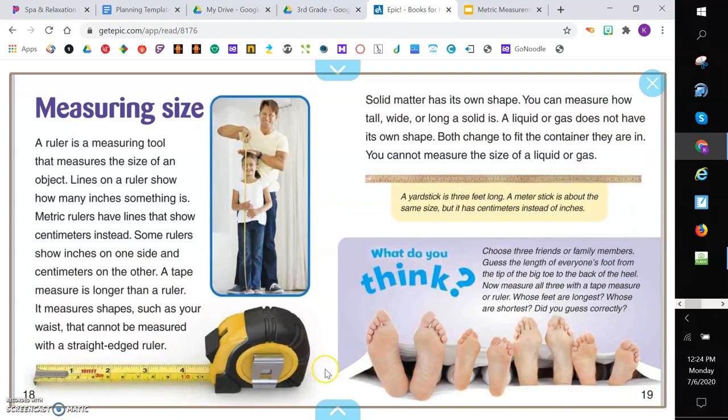Measuring size. A ruler is a measuring tool that measures the size of an object. Lines on a ruler show how many inches something is. Metric rulers have lines that show centimeters instead. Some rulers show inches on one side and centimeters on the other. A tape measure is longer than a ruler. It measures shapes, such as your waist, that cannot be measured with a straight-edged ruler. Solid matter has its own shape, and you can measure how tall, wide, or long a solid is. A liquid or gas does not have its own shape. Both change to fit the container they're in. You cannot measure the size of a liquid or gas.